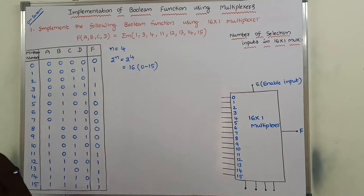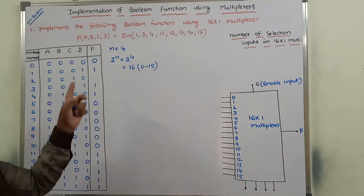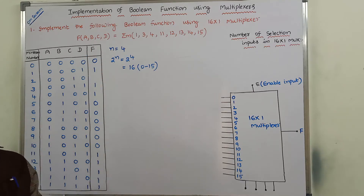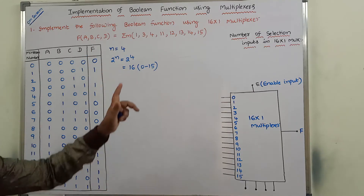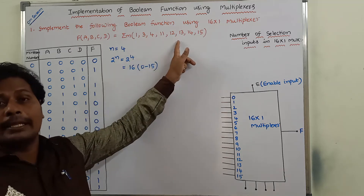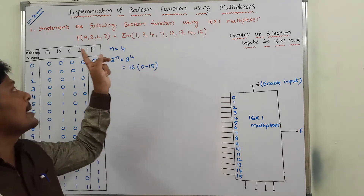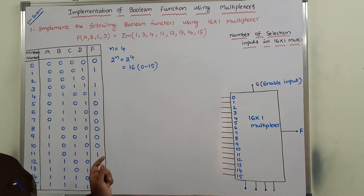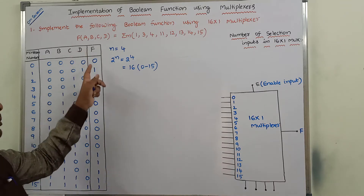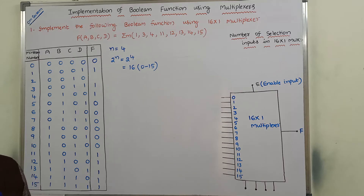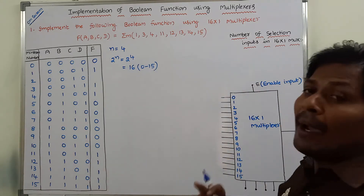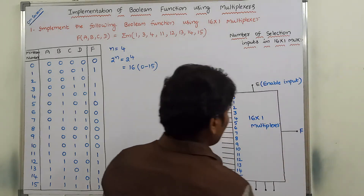This is the given Boolean function with 4 input variables. It produces output either 1 or 0 — output 1 for the present minterms, and output 0 for the remaining minterms. Now, we can go for the 16-by-1 multiplexer.